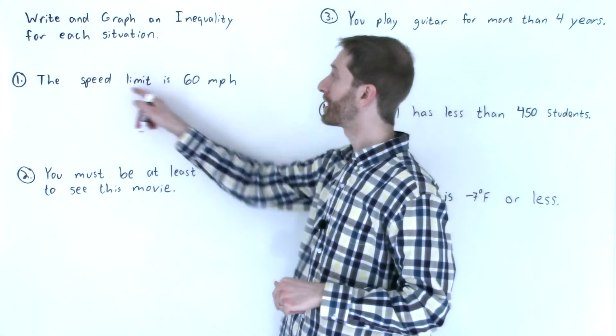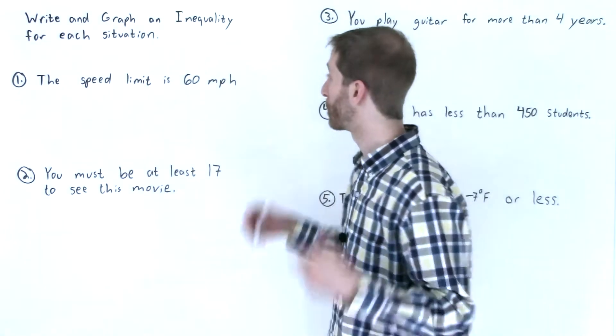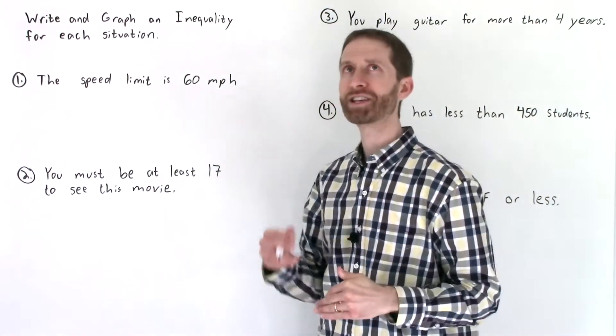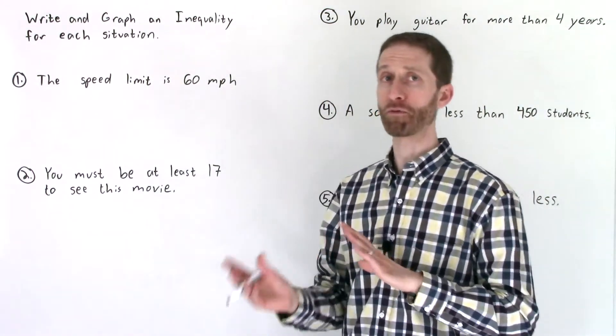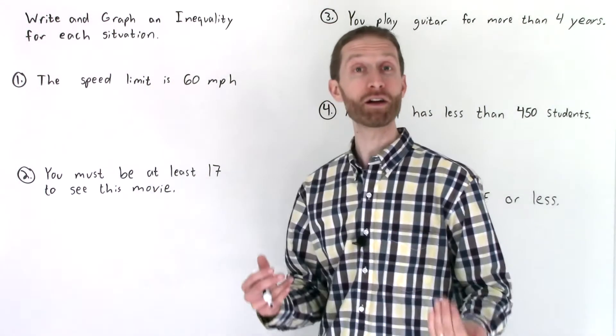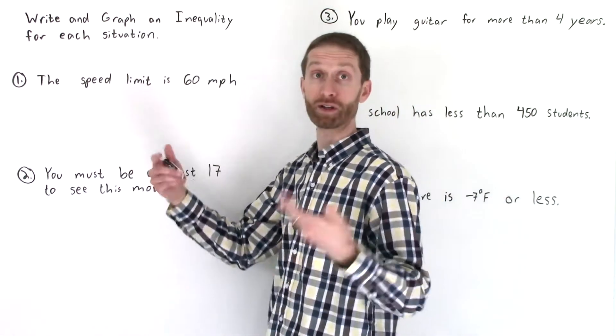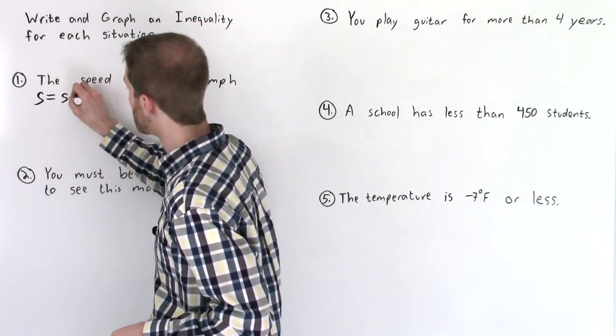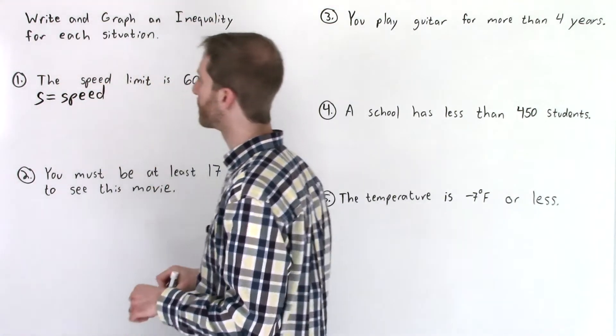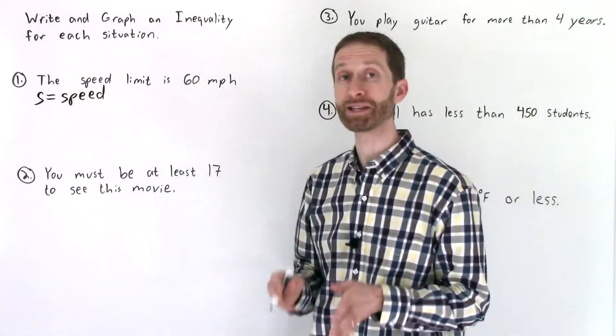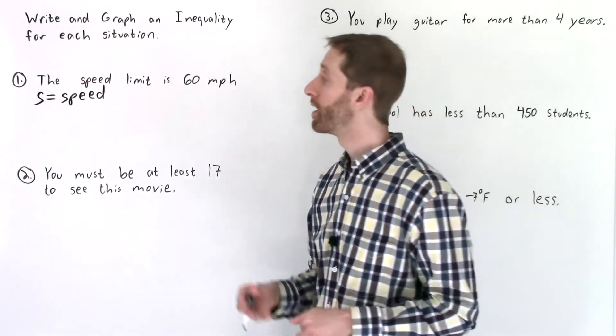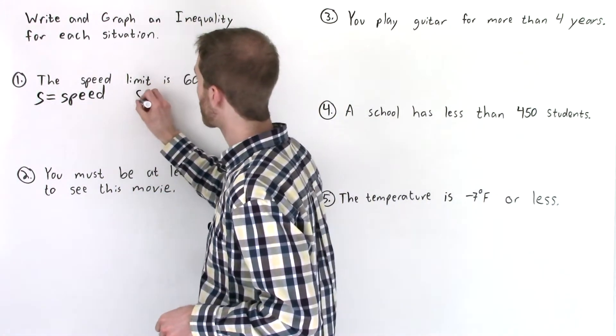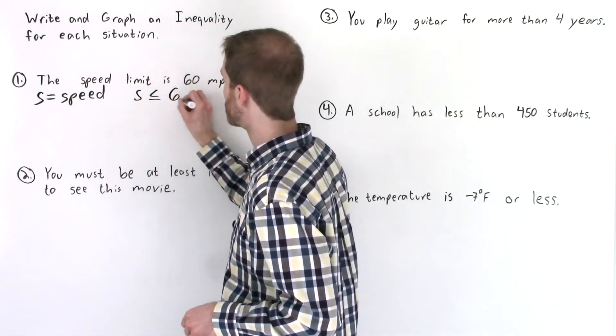We've got that the speed limit is 60 miles per hour. So what does that mean? Well that means our speed could be 60 or less. So that sounds like less than or equal to. But before we get to that we need to define a variable here for the thing we're measuring, the speed. So I'm going to let S equal the speed that we're going. From here we've got an inequality. Our speed can be 60 or less. So the speed is less than or equal to 60. So S is less than or equal to 60.